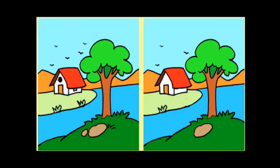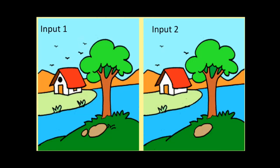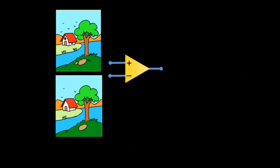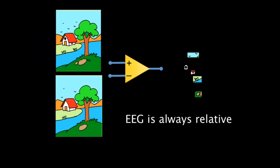Another way to think about this is the children's spot-the-difference game seen on restaurant menus. The picture on the left and the picture on the right are very similar, except for a few small differences. If we consider the left picture as input one and the right as input two, the differential amplifier output would show only those differences. This is a good way of thinking about EEG signals as something relative — the difference between two inputs — rather than absolute.